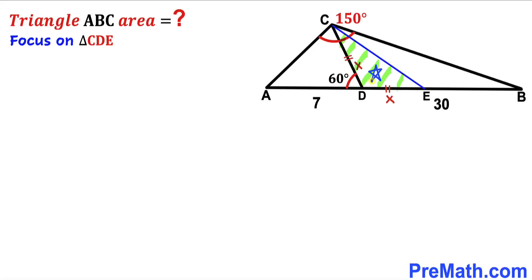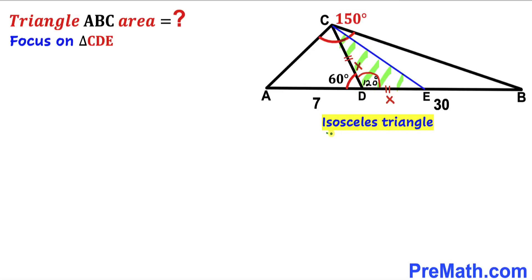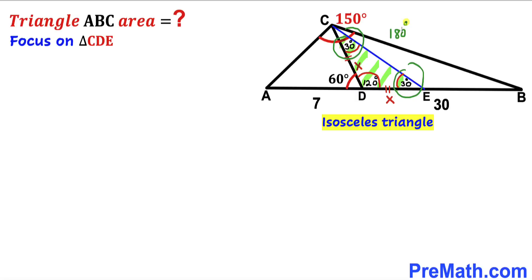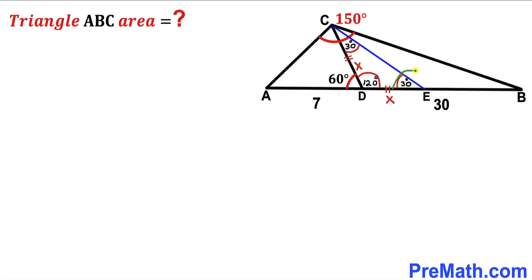Let's focus on triangle CDE. We know the straight angle is 180 degrees and angle ADC is 60 degrees, so the remaining angle CDE is 120 degrees. Since CD equals DE, triangle CDE is isosceles, meaning the two base angles are equal. The three interior angles sum to 180 degrees, so those two base angles are 30 degrees each. Since the straight angle is 180 and one part is 30 degrees, the remaining angle is 150 degrees.